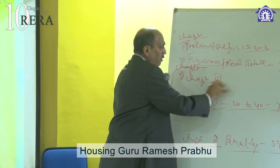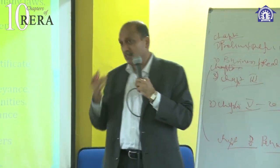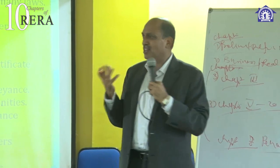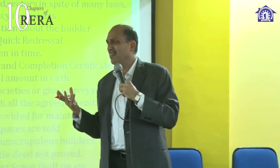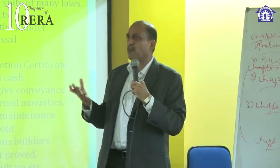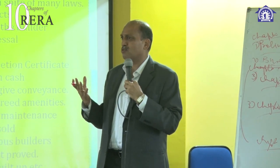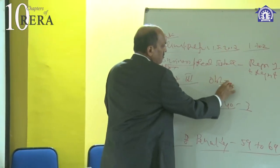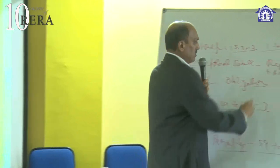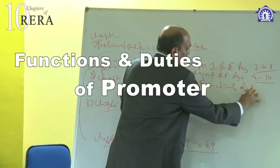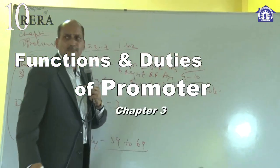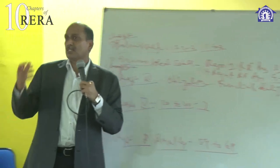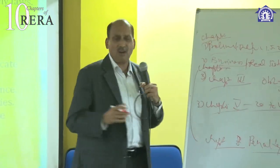Chapter number three is most important and the entire act is related to chapters two and three. Chapter three is about the main person who does business in real estate — naturally, the builder, who is called the promoter. In the Real Estate Regulation and Development Act 2016, the person who develops, markets the real estate project, and does the business is known as the promoter. So the functions and duties of the promoter are covered in section 11 to 18.